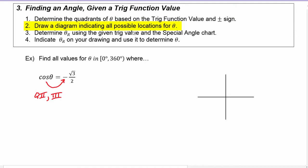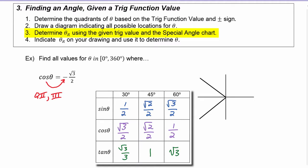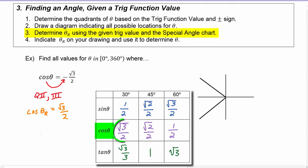Step two says draw a diagram indicating the possible locations for theta, so we're going to draw an angle in quadrant two and an angle in quadrant three. Step three says we have to determine the reference angle using the given trig value and the special angle chart. All the values on the special angle chart are positive, so we ignore the negative sign and look for where the cosine of a reference angle equals radical three over two. We see that theta-r has to be 30 degrees.